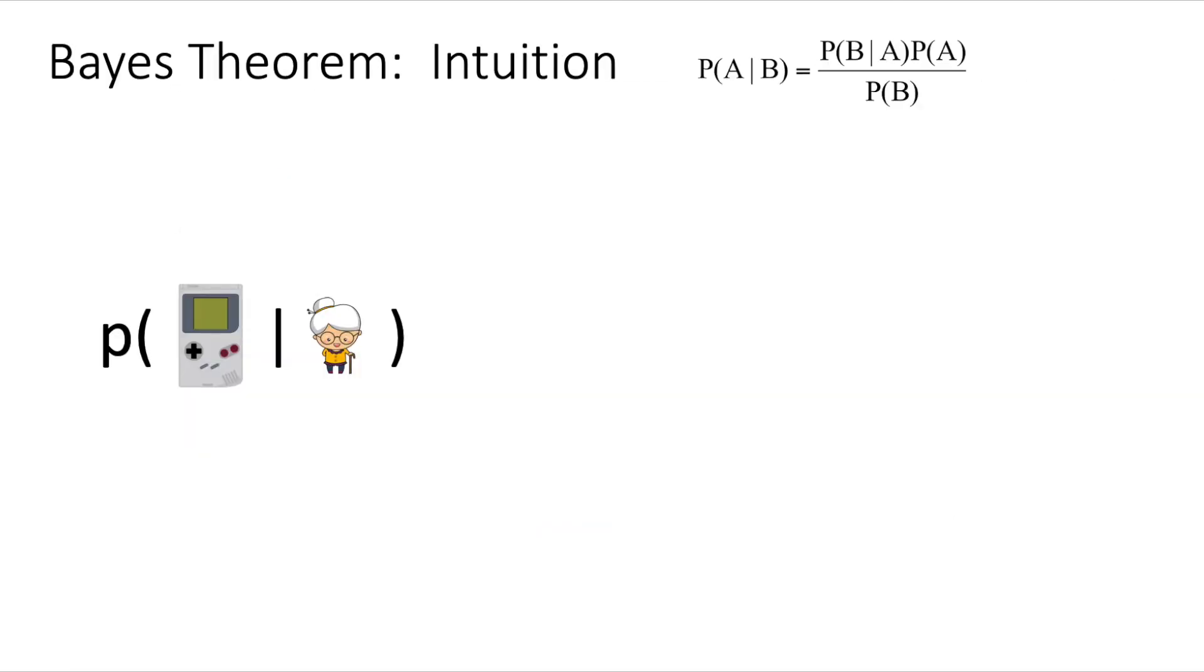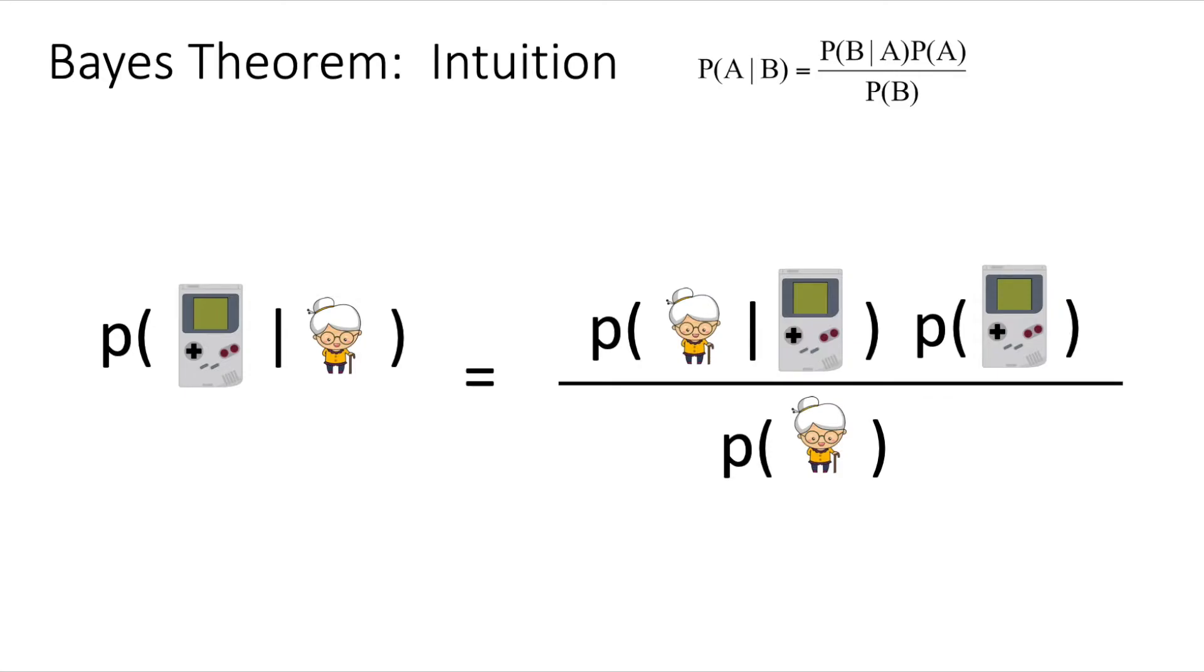So here we're going to see an intuition of this theorem. Imagine we want to figure out the probability that a given client buys a Game Boy, given that we know that the client is an old lady. According to the Bayes theorem, the result can be calculated from the expression in the right side. The first term is telling us out of the clients that we know already that they bought a Game Boy, how many of them were old ladies, in easy words.